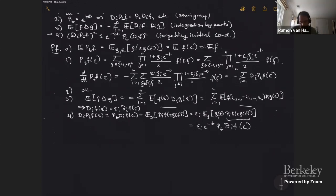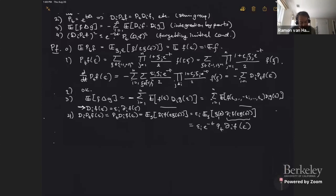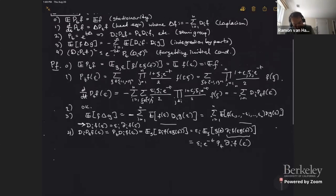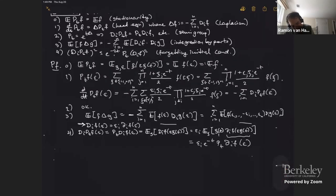There's nothing deep going on here. Once you have this probabilistic representation, you can just do these computations manually, and all of these properties simply pop up.